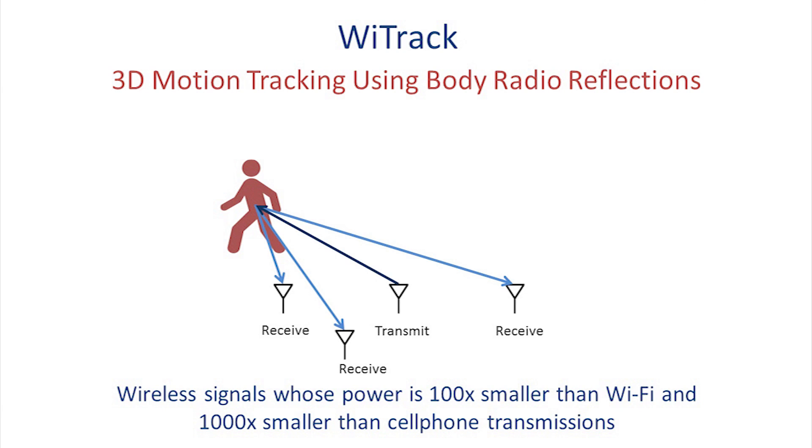YTrack measures the delays and maps them to the distance traveled by the signals. Based on a geometric model of the antennas, YTrack can now accurately determine the location of the person.